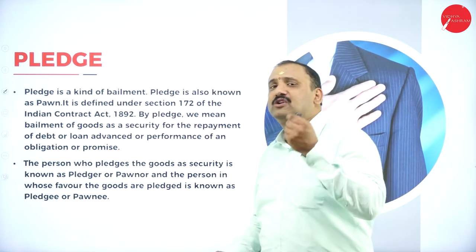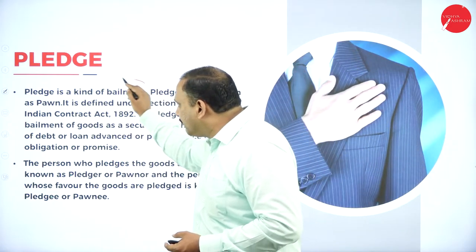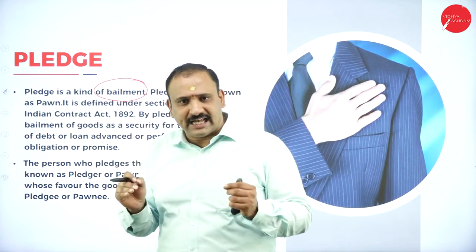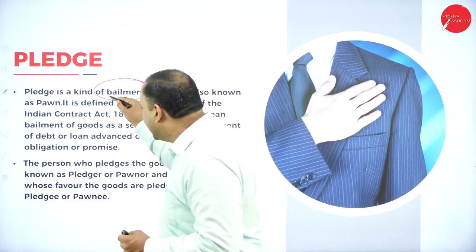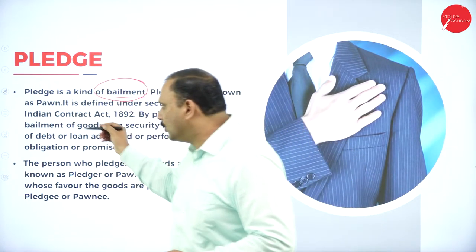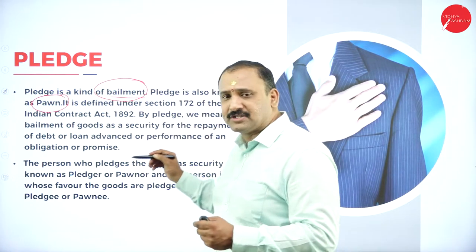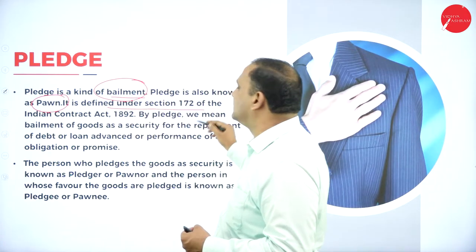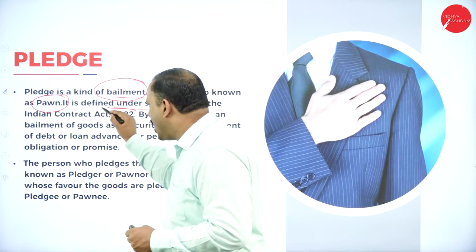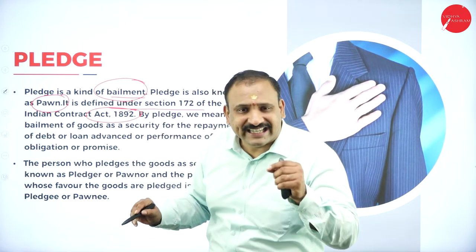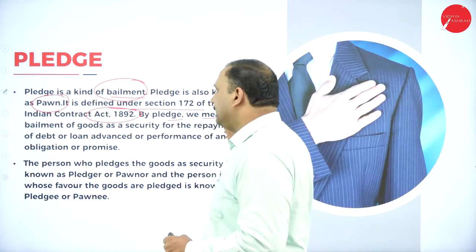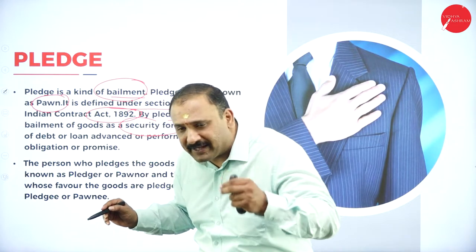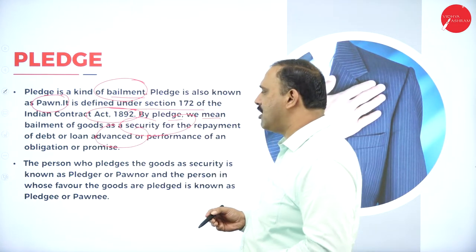The next topic is pledge. Pledge is a kind of bailment, also known as pawn. It is defined under Section 172 of the Indian Contract Act 1872. By pledge, we mean the bailment of goods as a security for the repayment of debt or a loan advance, or the performance of an obligation or promise.